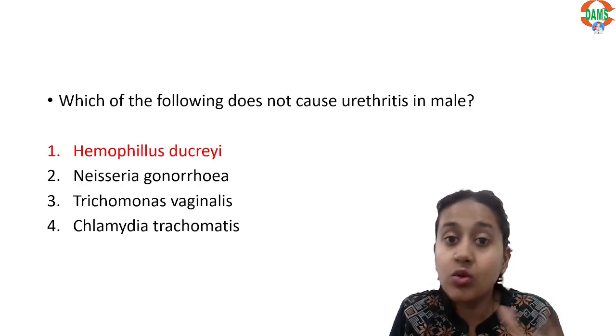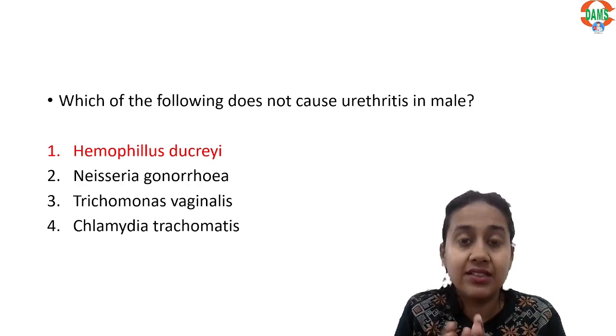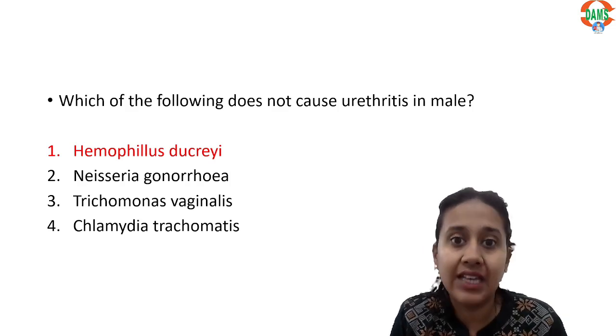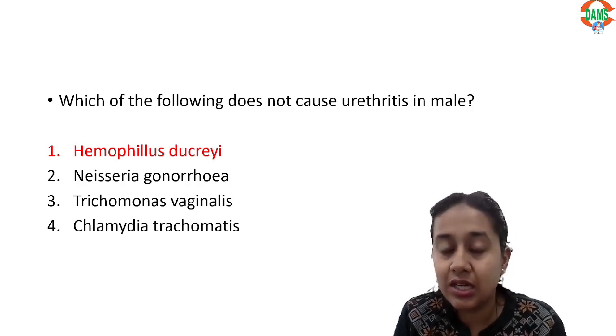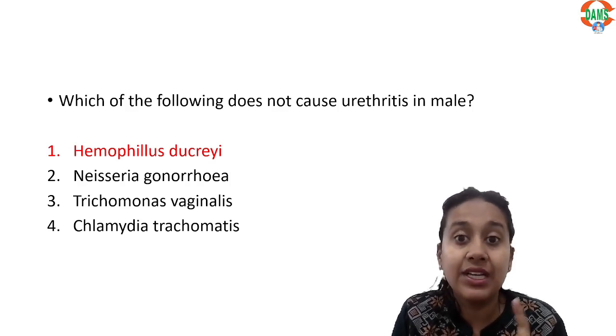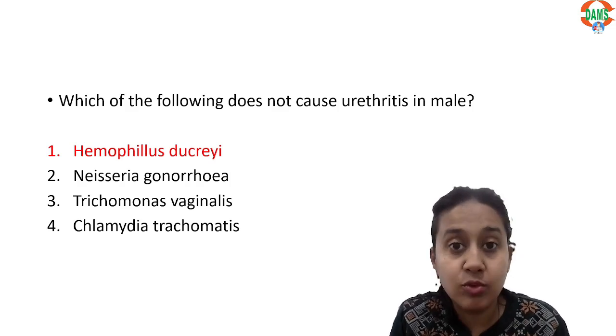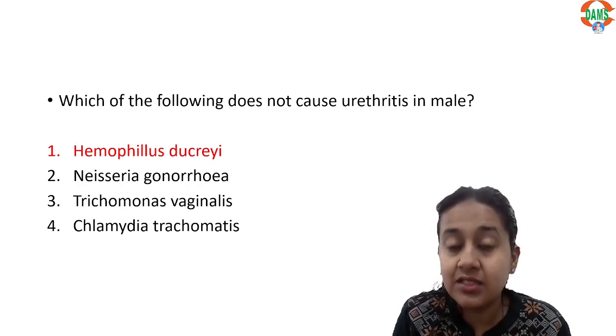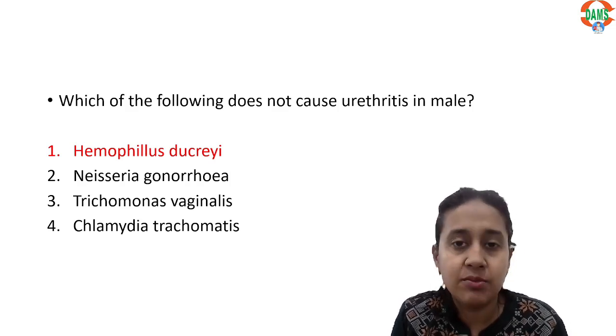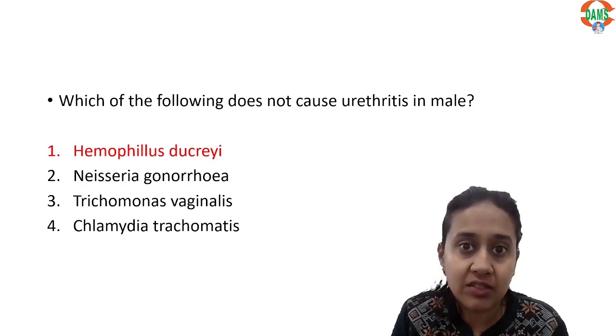Gonococcal urethritis occurs due to Neisseria gonorrhoeae, while non-gonococcal urethritis occurs due to Chlamydia trachomatis, Trichomonas vaginalis, Mycoplasma, and Ureaplasma.